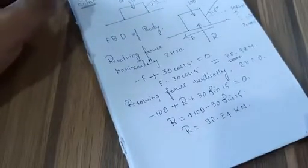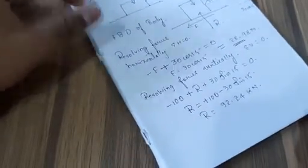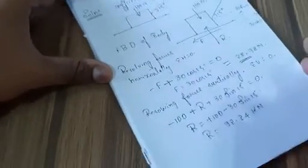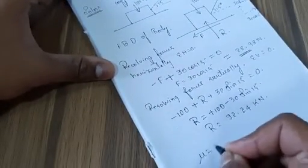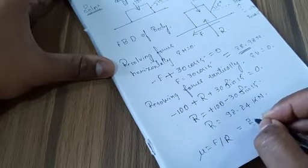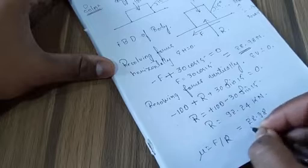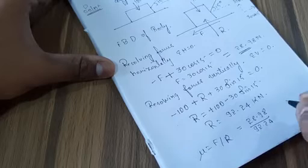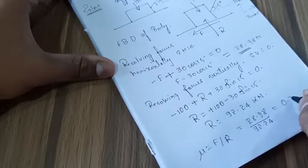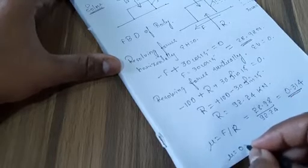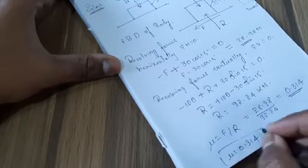They are asking for the coefficient of friction, which is mu equals F divided by R. So mu equals 28.98 divided by 92.24, which gives approximately 0.314. This is the coefficient of friction. This is the simplest problem.